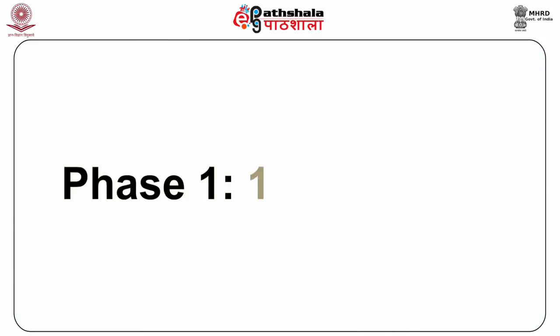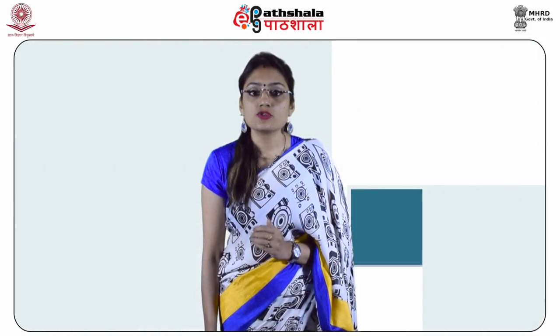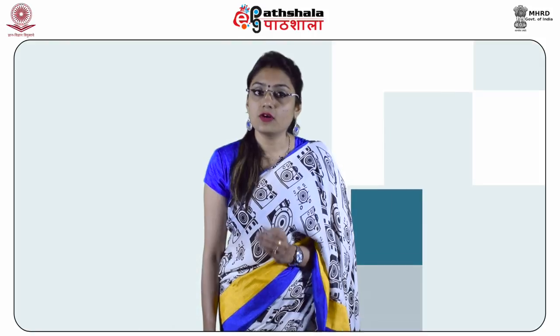Phase 1: From 1947 to 1968. The fiscal policy in the post-independence era focused on the taxation policy to achieve various economic objectives. To promote employment, tax incentives and tax holidays were granted to new investment ventures. Inequality was aimed to be reduced through progressive taxes on income and wealth. Emphasis was given to increasing import duties to reduce pressures on the balance of payment, and tax rebates on excise duties on consumption goods were introduced to stabilize prices. As there was initially a narrow tax base, the tax policy had to rely mainly on indirect taxes.